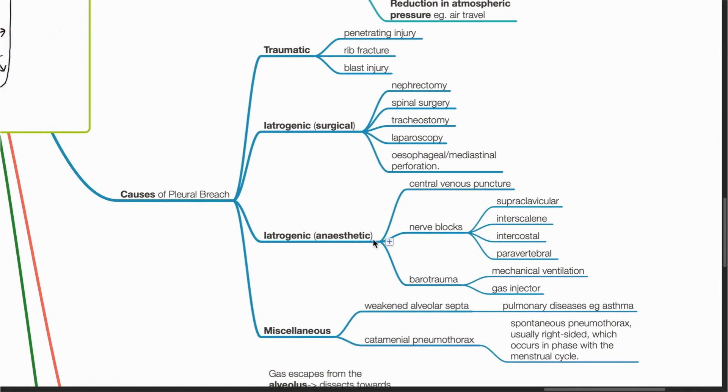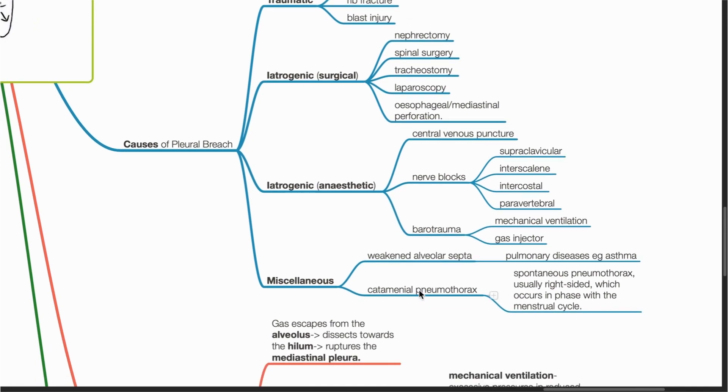Anesthetic causes include central venous line insertion, nerve blocks, or barotrauma from mechanical ventilation or gas injectors. Miscellaneous causes include weakened alveolar septa secondary to pulmonary diseases or catamenial pneumothorax.